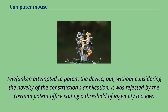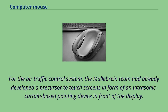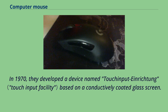Telefunken attempted to patent the device but it was rejected by the German patent office, stating a threshold of ingenuity too low. For the air traffic control system, the Malibran team had already developed a precursor to touch screens in the form of an ultrasonic curtain-based pointing device. In 1970, they developed a device named Touch Input Einrichtung based on a conductively coated glass screen.